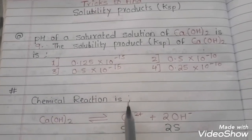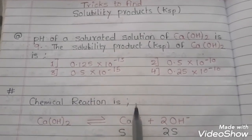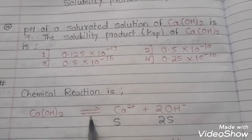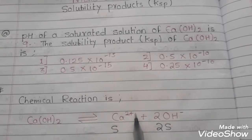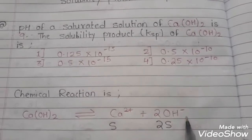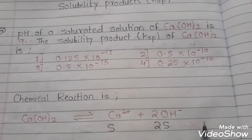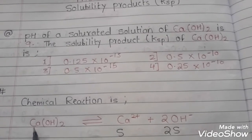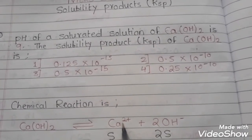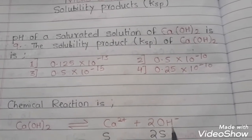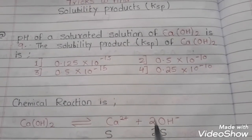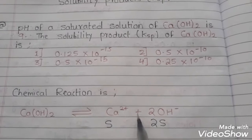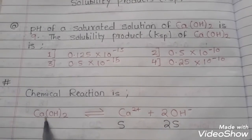The first thing we are going to do is understand the chemical reaction. Calcium hydroxide undergoes a reversible reaction — it dissociates into calcium cations and hydroxide anions. Likewise, vice versa, calcium cations and hydroxide anions will combine together to form calcium hydroxide.